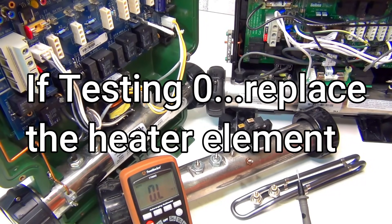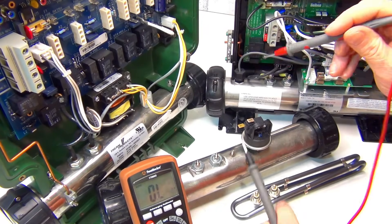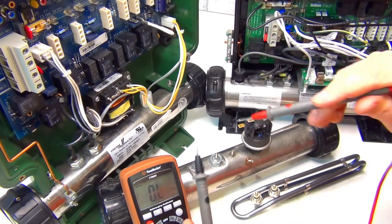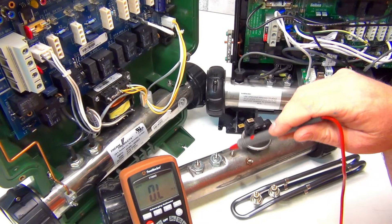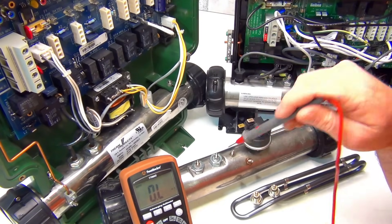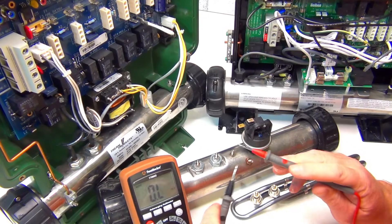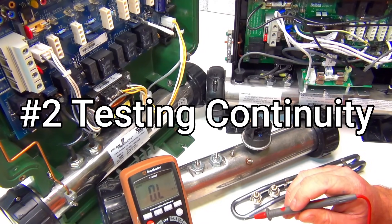I know there's some videos out there that test it and it's zero. Well, if you're testing ohms, you want between 10 and 11 for a hot tub element.